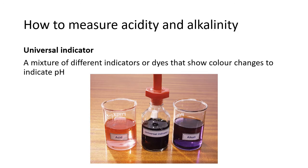If you want to know the specific pH, you could use universal indicators — a mixture of indicators or dyes that show a variety of colour changes correlating to the pH scale. When using universal indicator, you usually have a pH chart, and from that you can determine the pH of the solution. Universal indicator is obviously going to be more accurate than litmus paper.